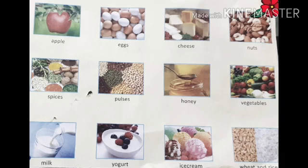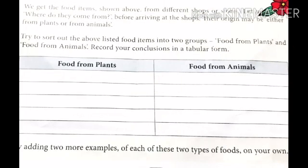Some food items are given there: apple, eggs, cheese, fruits, spices, pulses, honey, vegetables, milk, yogurt, a type of curd from which water is drained, ice cream, and grains.